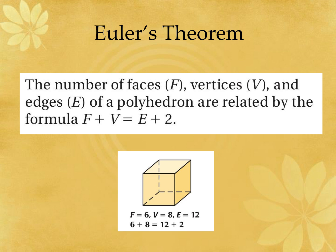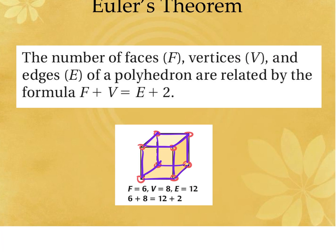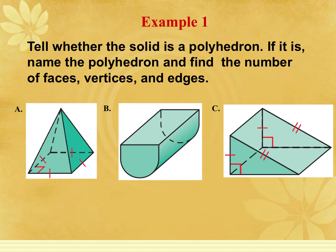There are eight vertices where three edges intersect, and twelve edges — four connecting the top and bottom, four around the top, and four around the bottom, for a total of twelve. Using Euler's theorem: faces plus vertices equals edges plus two — six plus eight is fourteen, and twelve plus two is fourteen. So it's a little tool you can use to check that you counted faces, edges, and vertices correctly.